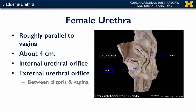With respect to differences of sex, the urethra is quite polymorphic. In females, the urethra is fairly parsimonious — it's very short, roughly about four centimeters long. It runs approximately parallel to the vagina, with an internal urethral orifice and an external urethral orifice that is typically found between the clitoris and the vagina.